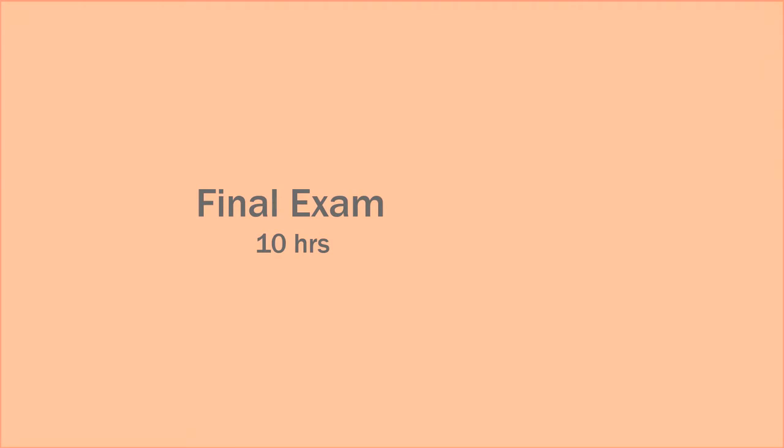The final exam is part of component 2 which counts for 40% of your total mark. I mentioned this at the very beginning when I spoke about the structure of the course. For the GCSE art you have to sit a 10-hour exam spread over 2 to 3 days at the end of year 11 and you need to produce a final art piece.